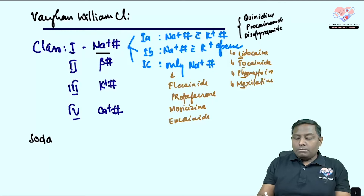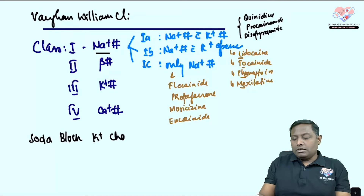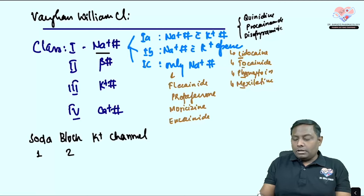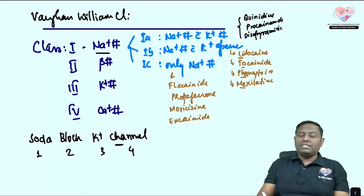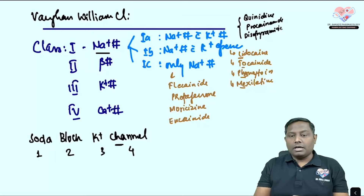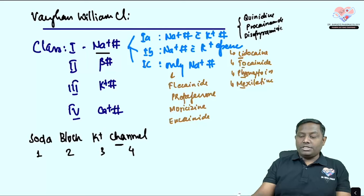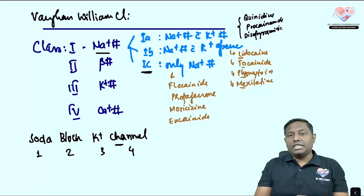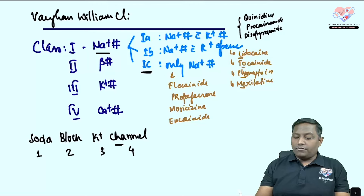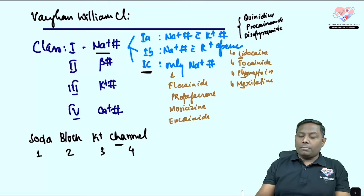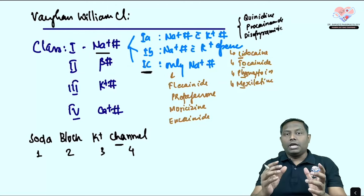A useful mnemonic: 'Soda blocks potassium channel' — class 1 (sodium), class 2 (beta/no channel), class 3 (potassium), class 4 (calcium). Within class 1, only class 1C is a pure sodium channel blocker — drugs include flecainide, flecainide, propafenone, and moricizine.